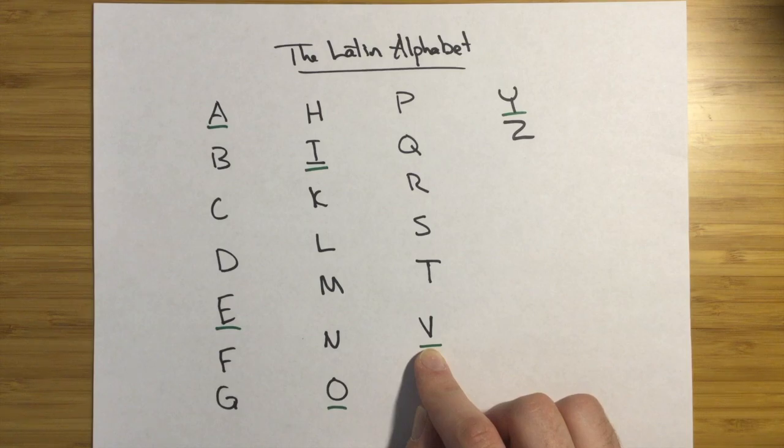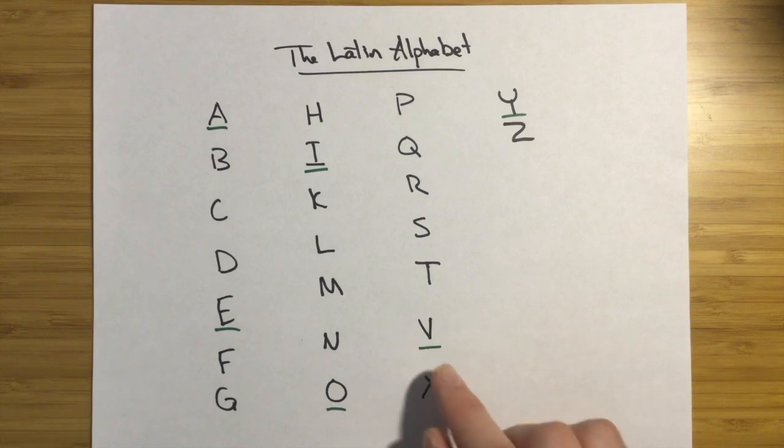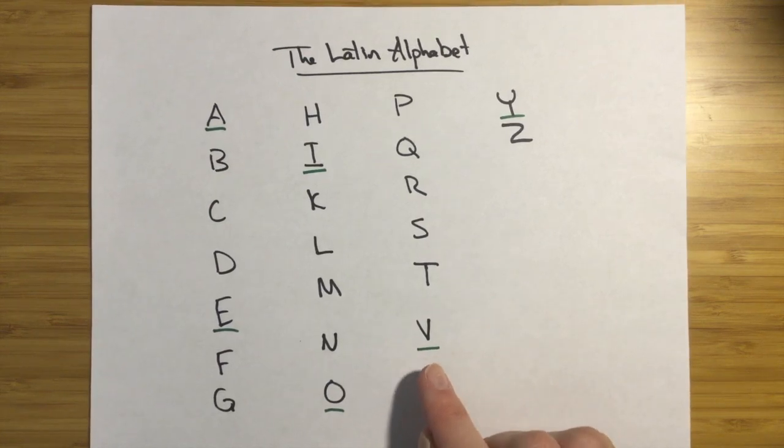V makes a W sound in classical Latin later. And in ecclesiastical Latin, it'll make a V sound. Use whatever you like. In these videos, I'm going to be using the classical pronunciation.